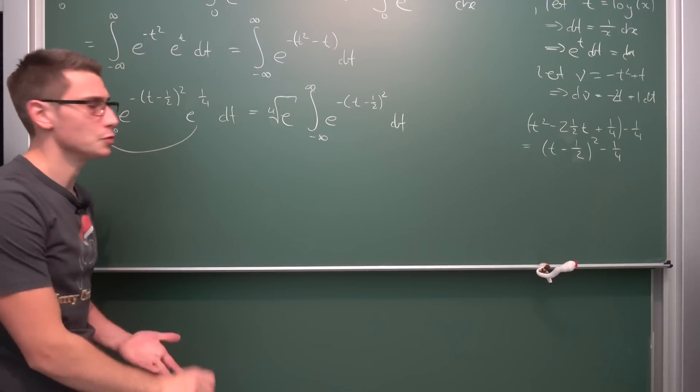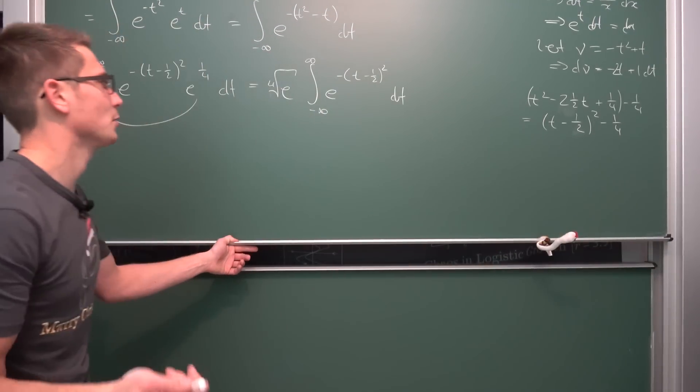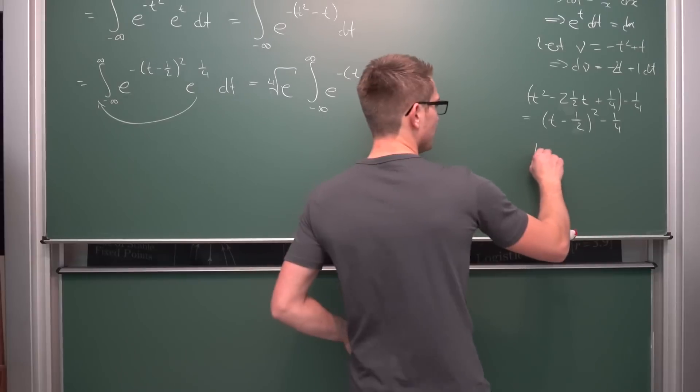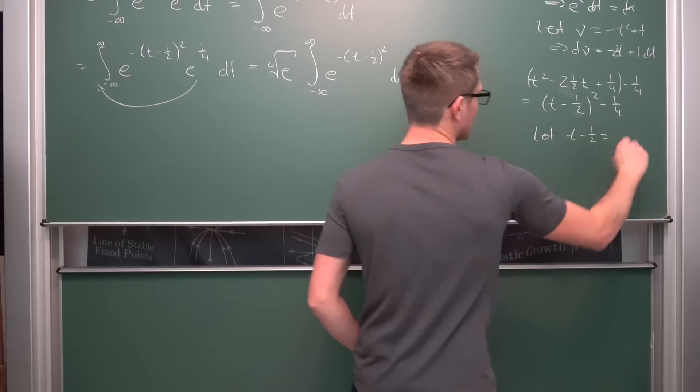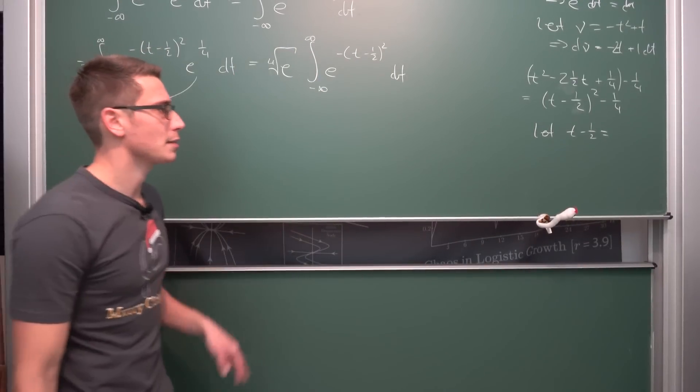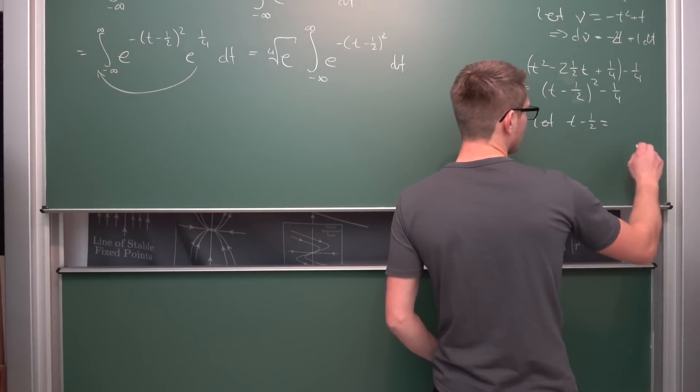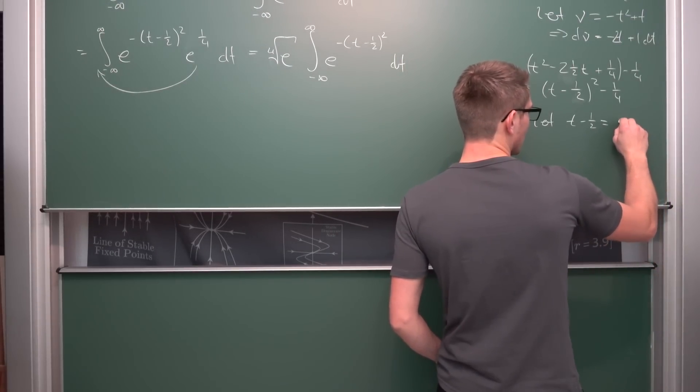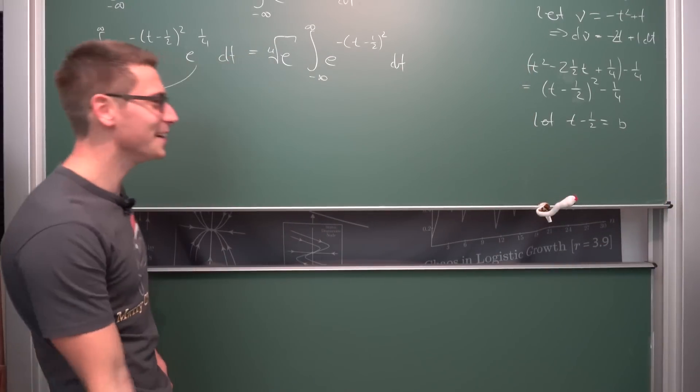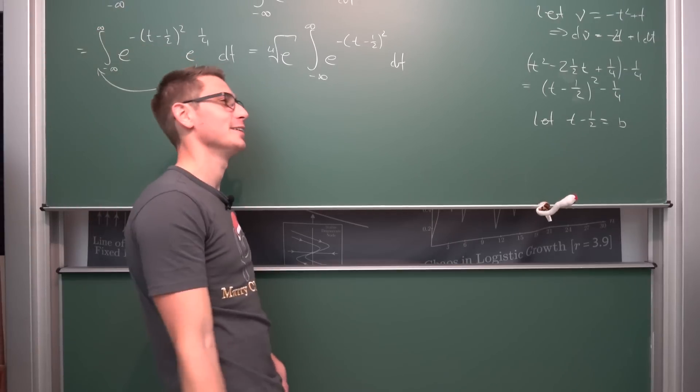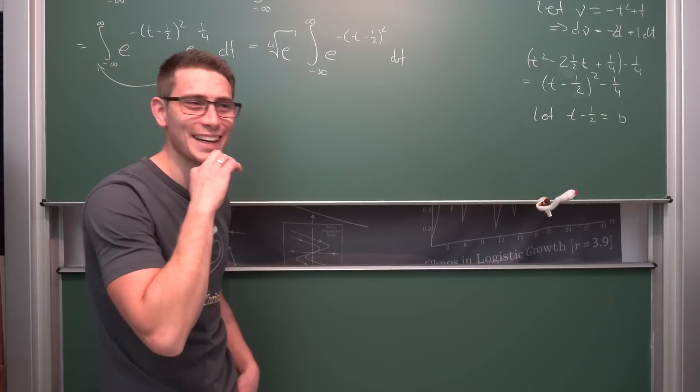Now all that's left to do is to introduce a simple substitution, and then we should basically get a Gaussian integral. Let t minus one half be equal to... let's use something funky, let's use b. We're going to use b. Just b. Just me as a b looking kind of thing.